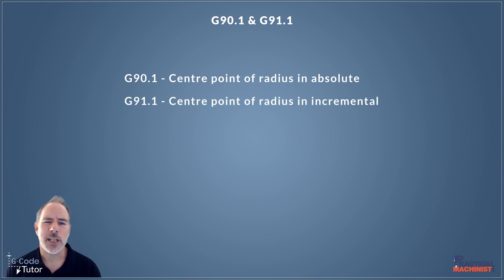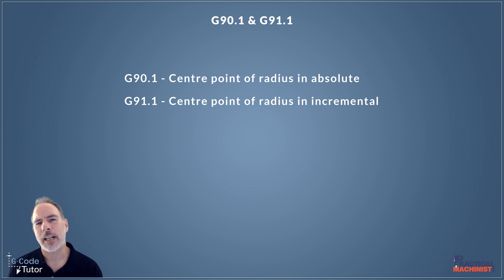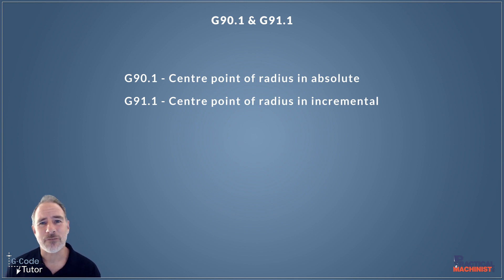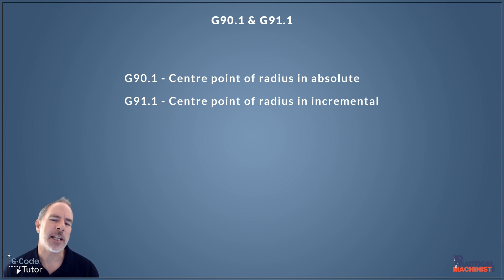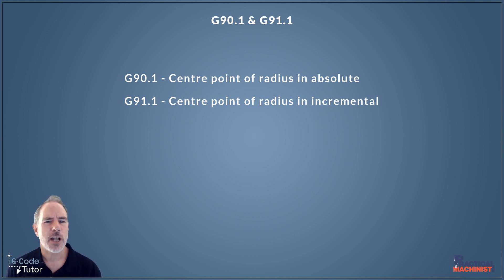Normally machines default to G91.1, and this means the center point is taken from the last known position of the tool before we perform that radius program. So G90.1 puts our center point in absolute positioning, and G91.1 puts it in incremental mode. Remember, most machines do default to incremental, so you're probably used to programming this way. If for some reason things are not working as they should, check that your G90.1 or G91.1 is correct.